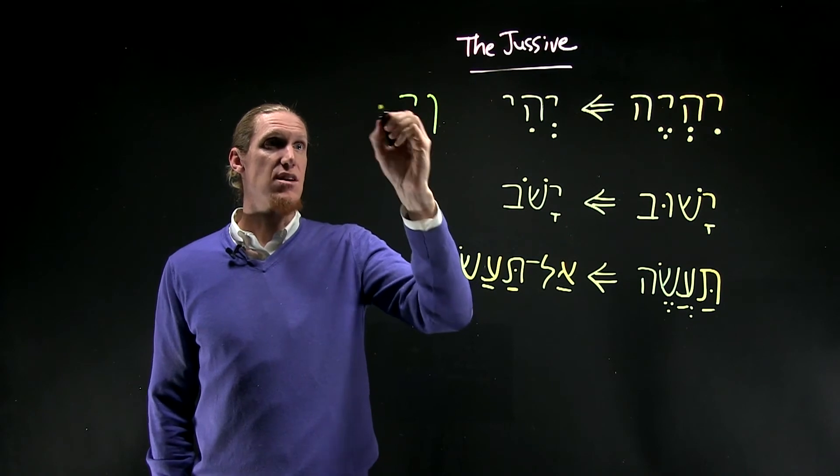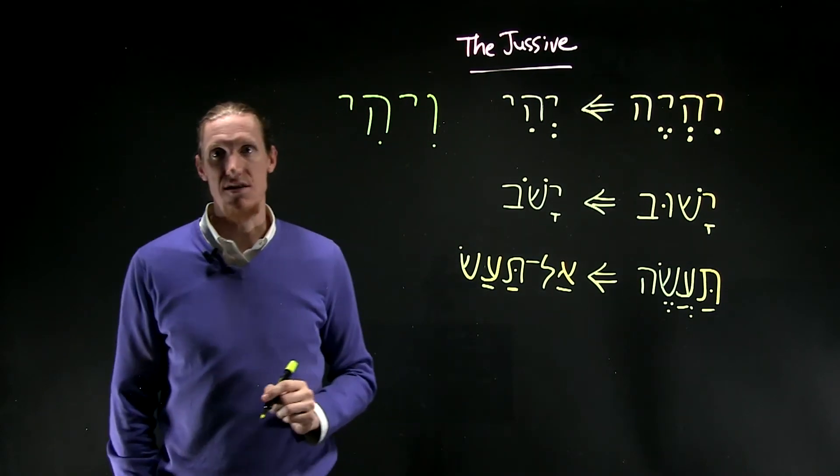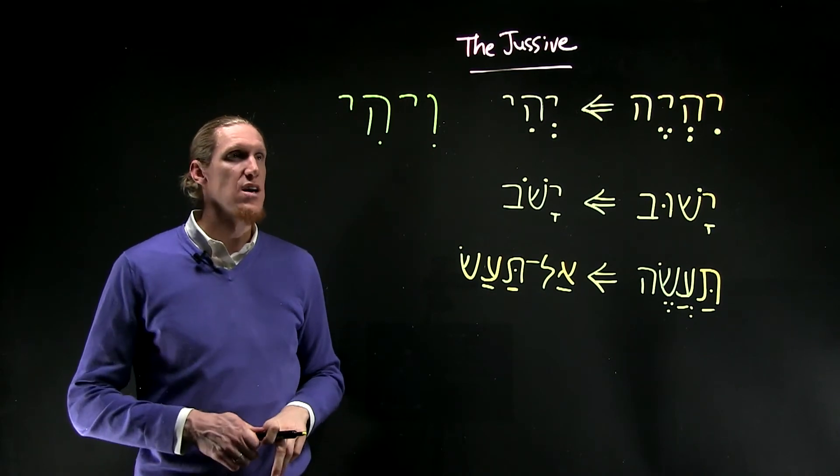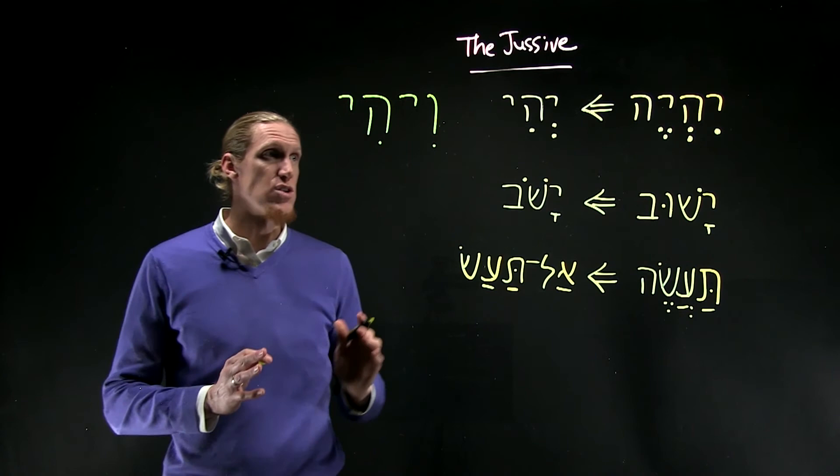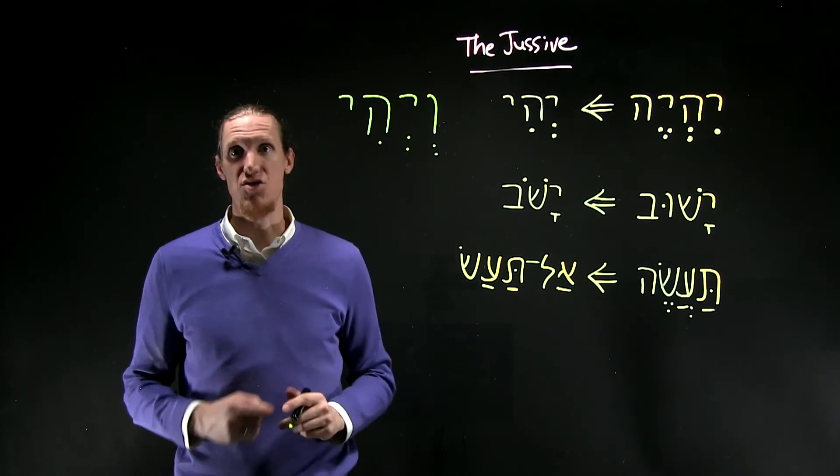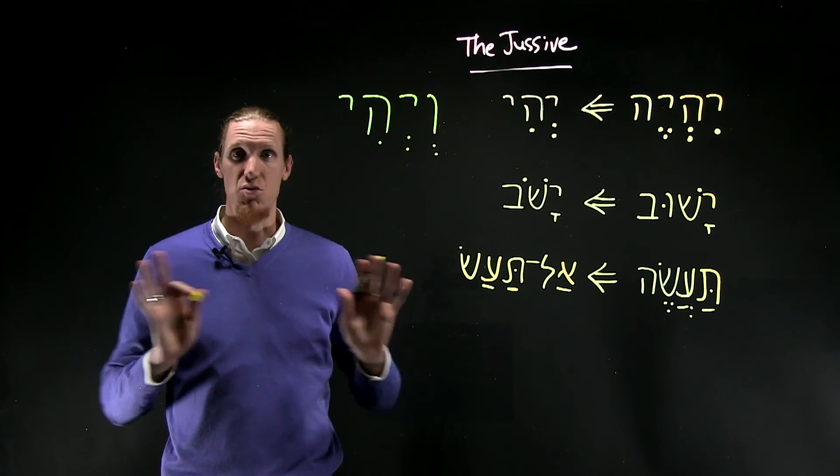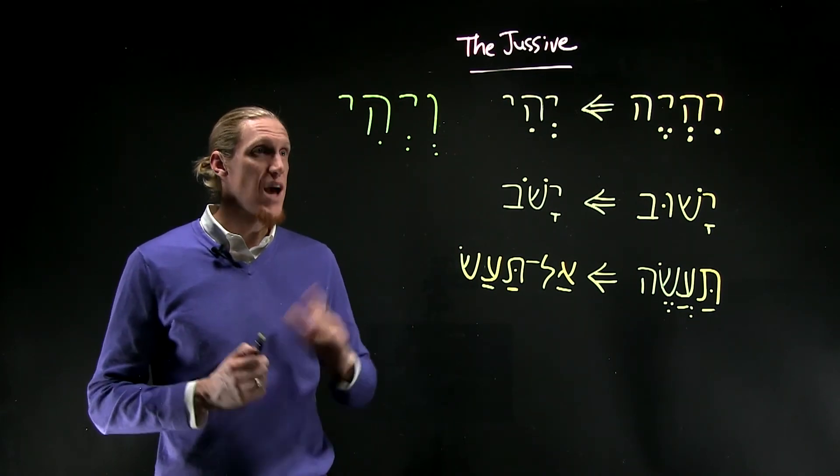It creates the unique form vhi. You see this a couple of times in Genesis 1. It does this because of the sheva rules, so you can't begin a word with two consecutive shevas. Hebrew just will not stand for that.